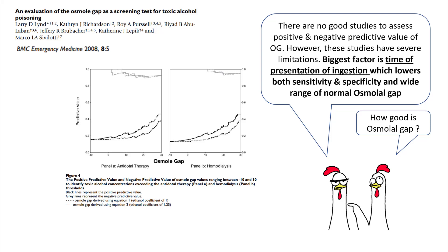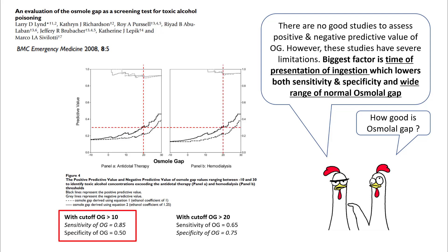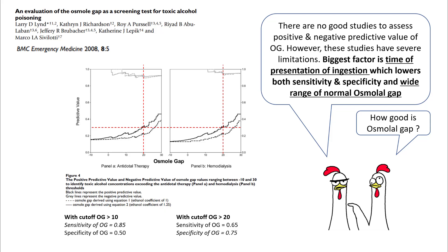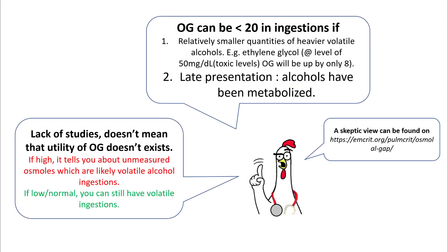There are no good studies to assess the positive and negative predictive value of osmolal gap. Lind et al. showed that with a cutoff of more than 10, the sensitivity of osmolal gap is around 0.85, and with a cutoff of more than 20, the specificity is 0.75. The biggest problem with these studies is the timing of presentation — the later a patient presents, the more likely the alcohols have been metabolized, so you can still have toxic ingestions with a normal osmolal gap. Also, the wide range of normal osmolal gap lowers both sensitivity and specificity. Lack of studies does not mean the osmolal gap has no utility: if high, it suggests unmeasured osmols likely from volatile alcohol ingestion, but normal or low values do not exclude volatile ingestion — you must maintain a high index of suspicion.